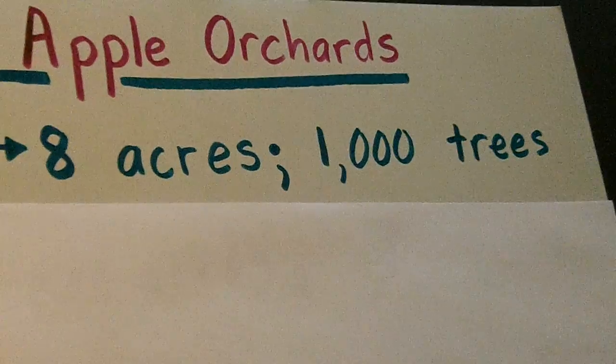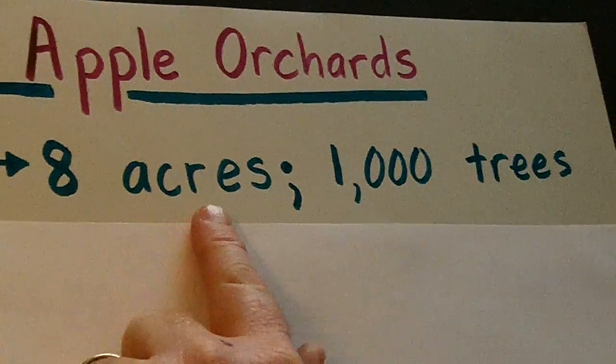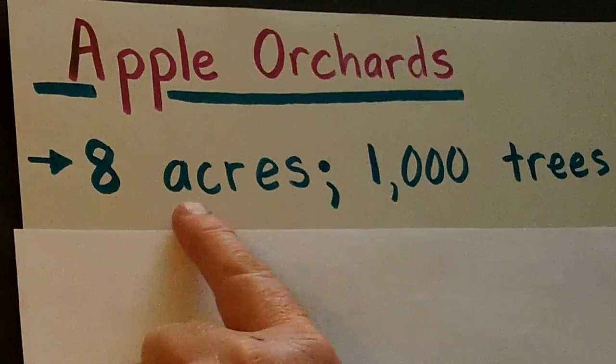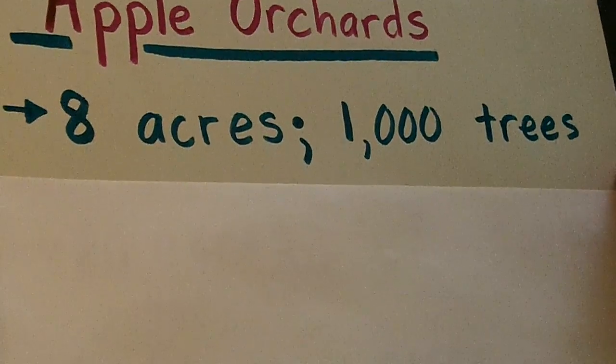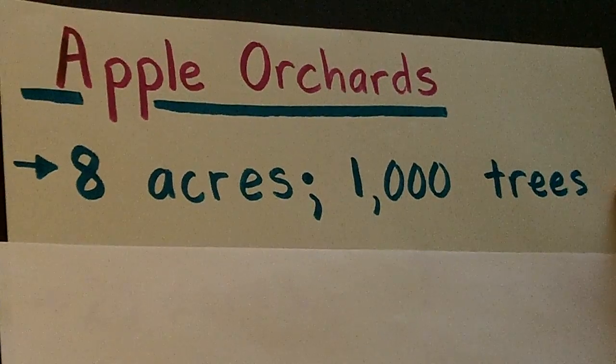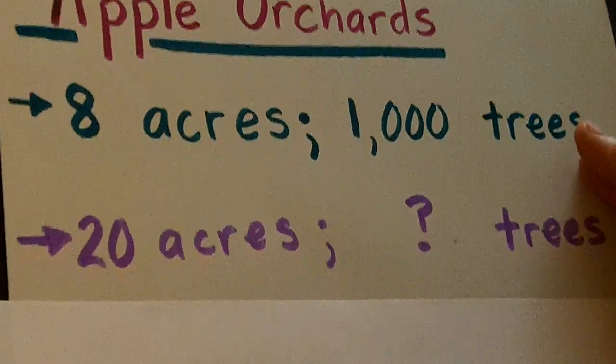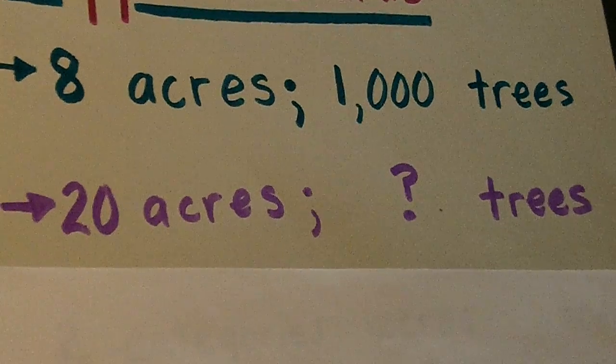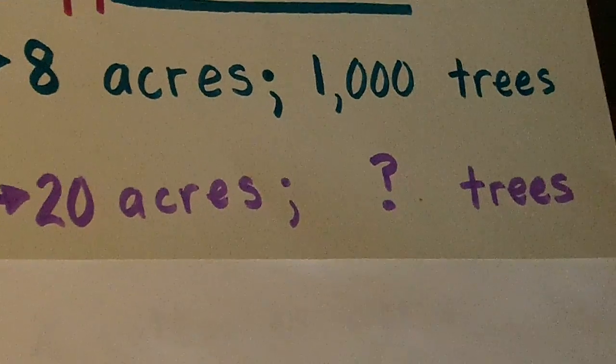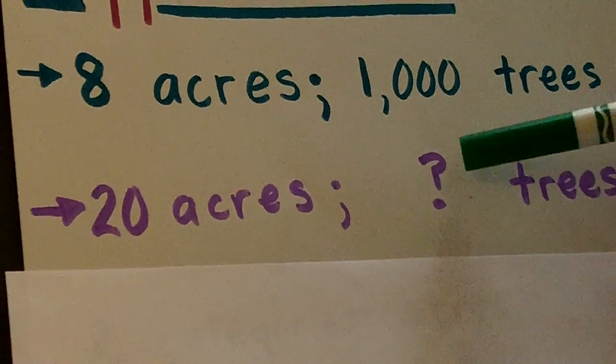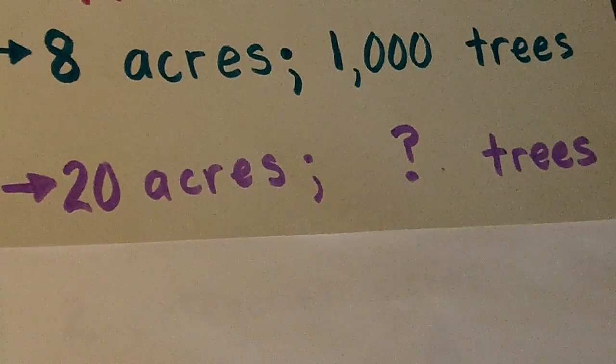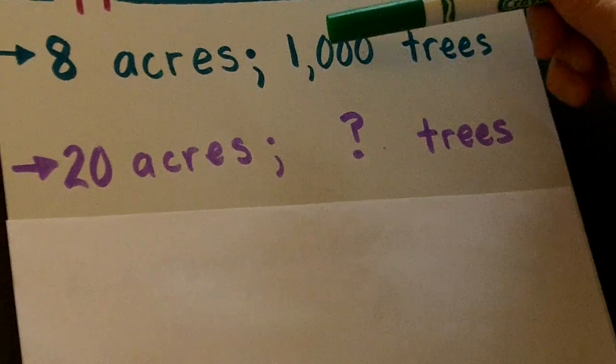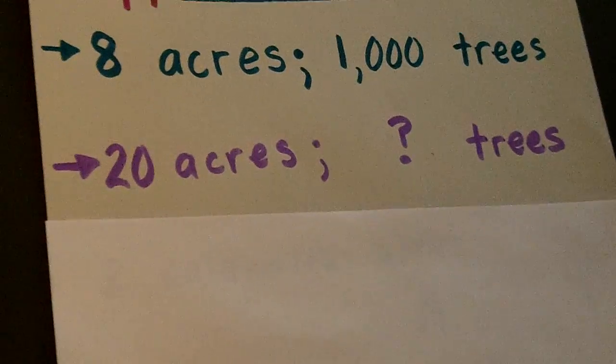Let's say I have a big property and I have eight acres of apple trees and there are 1,000 trees in the eight acres. Now, let's say I buy a piece of land next to what I have now. It's a pretty big piece and there's going to be 20 acres that I'm going to plant the same ratio of trees per acre. So, we want to know how many trees are going to fit on those 20 acres if it's the same ratio that when we plant 1,000 on eight acres.